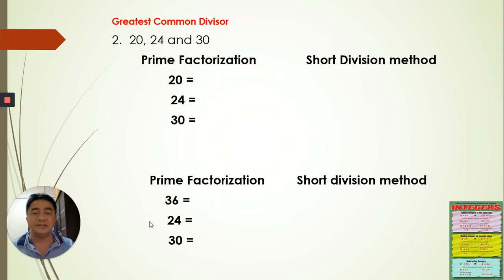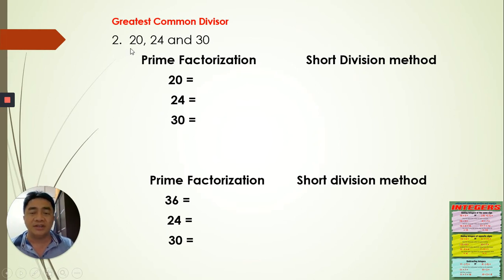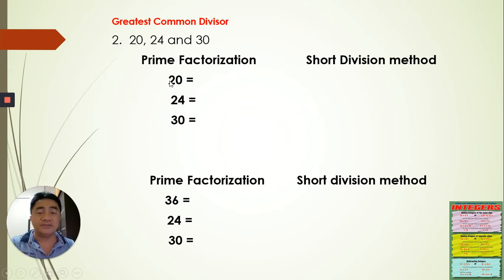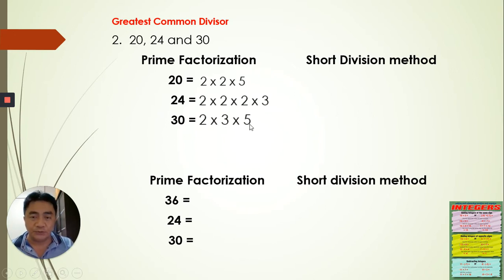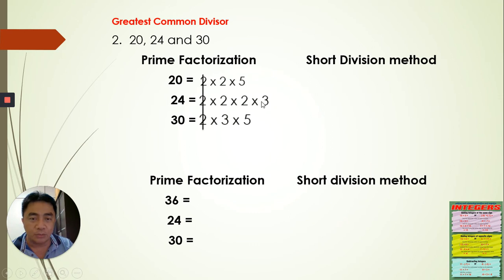Now we have additional examples using only prime factorization and the short division method. We have the integers 20, 24, and 30. For prime factorization: 20 has factors 2, 2, and 5; 24 has 2 times 4 times 8 times 3; and 30 has 2 times 6 times 5. We group the twos — one group — and we have no more common groups because we don't have two in one number, or five, or three across all three. Therefore, the GCD is 2.